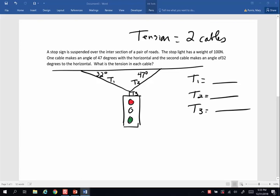A stop sign is suspended over the intersection of a pair of roads. The stop sign has a weight of 100 newtons. One cable makes an angle of 47 degrees with the horizontal, and the second cable makes an angle of 32 degrees with the horizontal. What's the tension in each cable?